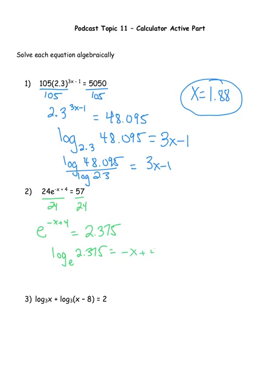Log base e of 2.375 equals (negative x + 4). Here's why this is easier: in the previous question I had to change bases or dig through a menu. I don't have to do that here because log base e is the same as ln, and that button is right on the home keys of every calculator. I press ln, then 2.375, and get 0.864997. Now solving the linear equation: subtract 4, then divide by negative 1, giving x equals 3.135.